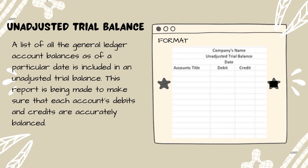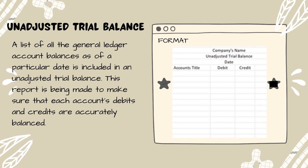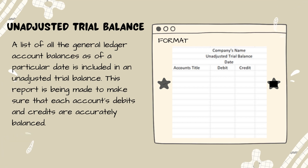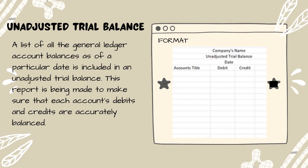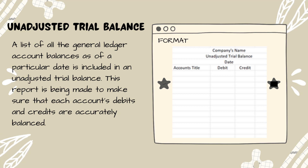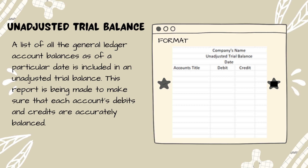An unadjusted trial balance: a list of all general ledger account balances as of a particular date. This report is made to ensure that each account's debits and credits are accurately balanced. The unadjusted trial balance is used to compute total income at a particular date and to calculate and balance debit and credit transactions, determining whether a company's income in and out is balanced.